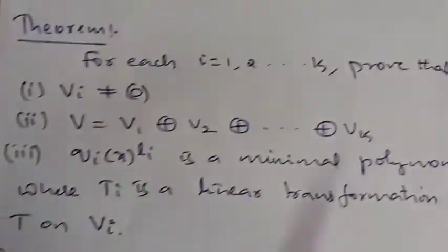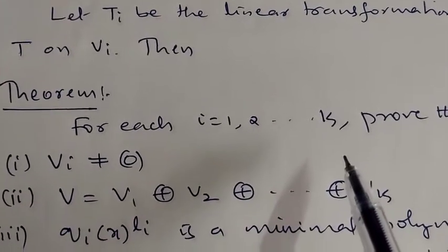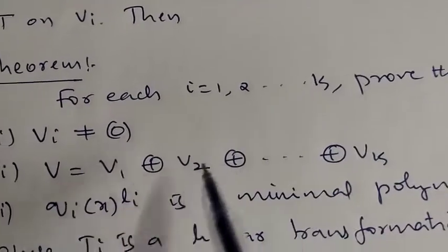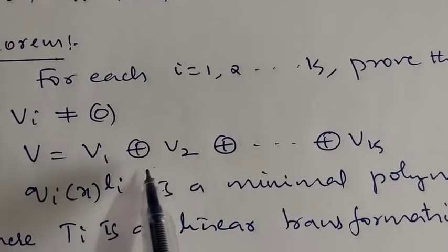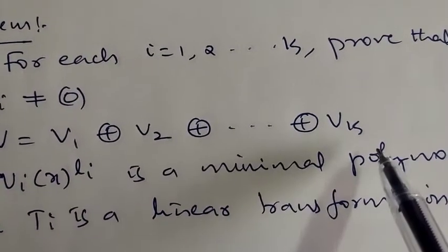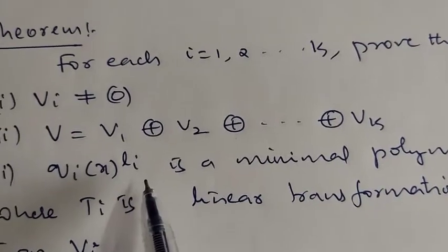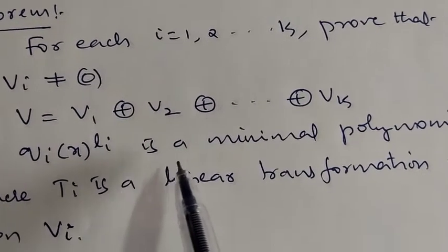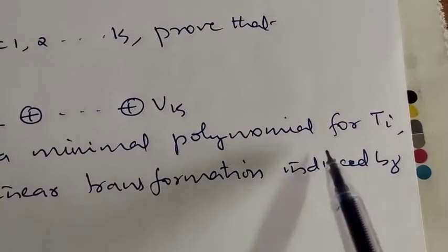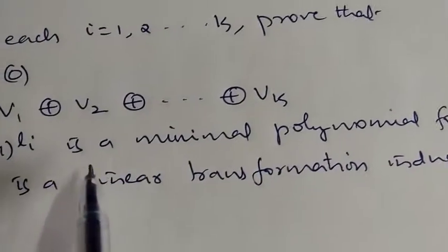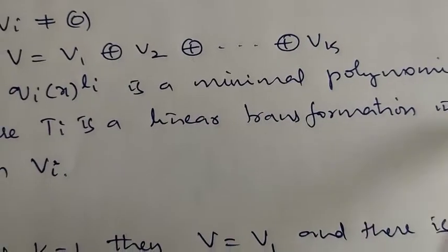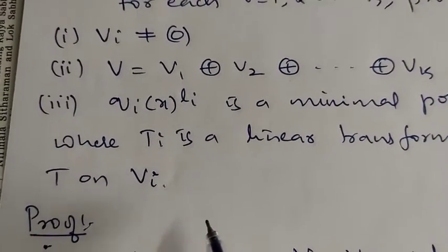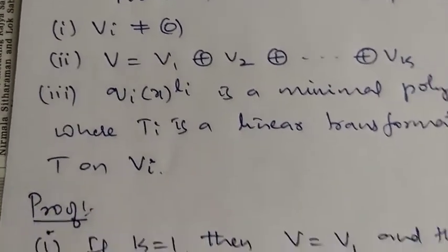We now state the main result: for each i = 1 to k, (1) Vi is non-zero, (2) V is the direct sum of V1, V2, ..., Vk, and (3) Qi(x)^Li is the minimal polynomial of Ti. Let us prove these one by one.